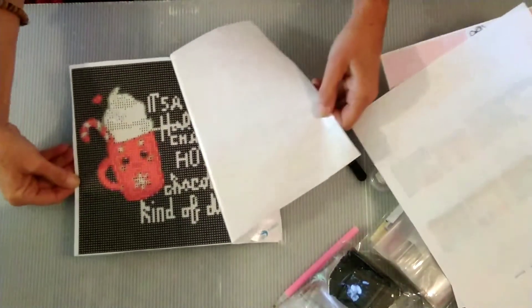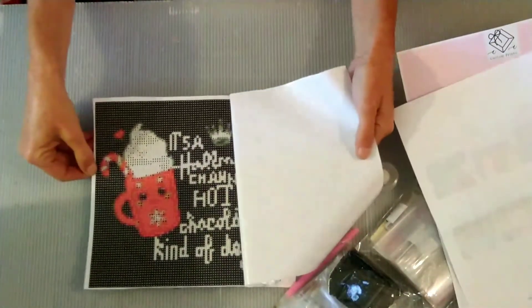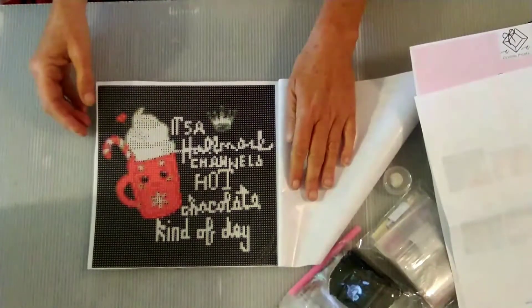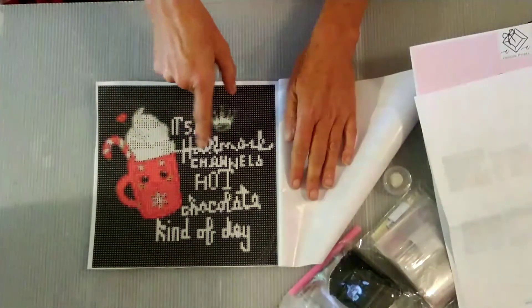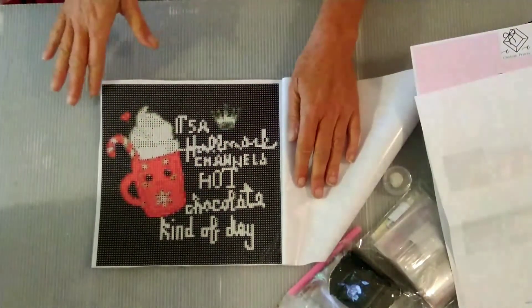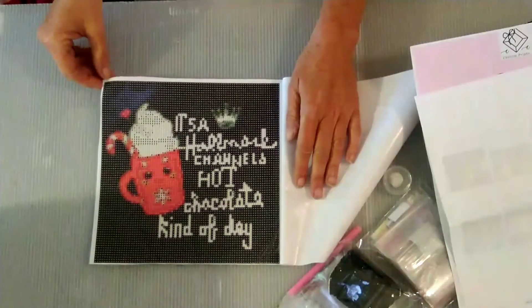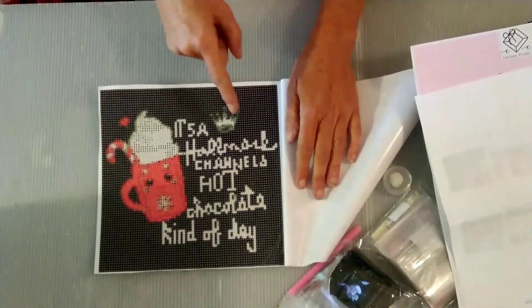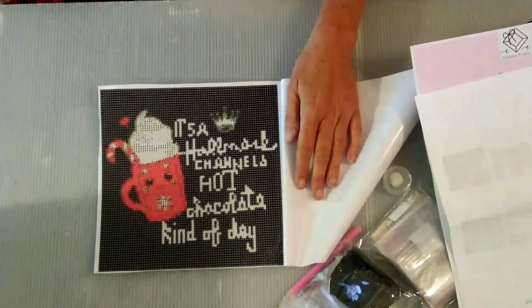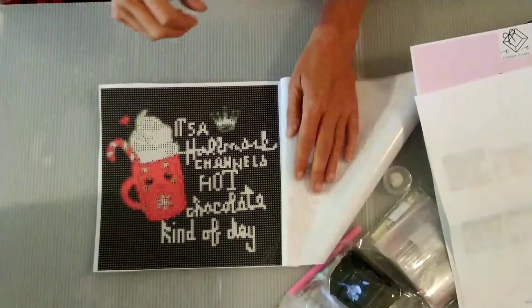We have our canvas. This is going to be really cute. It is covered in opaque paper, so I'm guessing this is double-sided adhesive. It's really small so I'm a little worried about the lettering, but I think it's going to be just fine. Isn't that adorable? It's a Hallmark channel hot chocolate kind of day. I am super excited to start this one. In fact, I'm going to start it today because it's going to be a gift for a very special friend. She loves the Hallmark channel and I love hot chocolate. She gets me hot chocolate every year for Christmas, usually a cute little Christmas mug. So I can't wait to do this canvas for her.